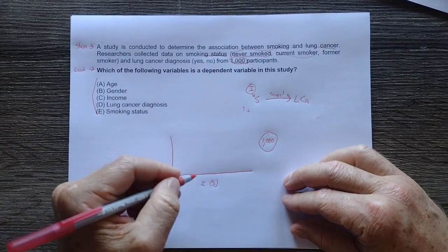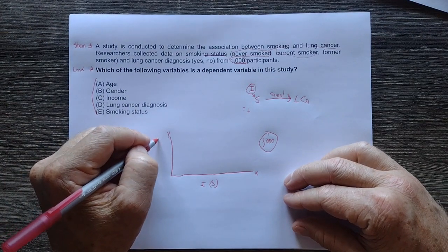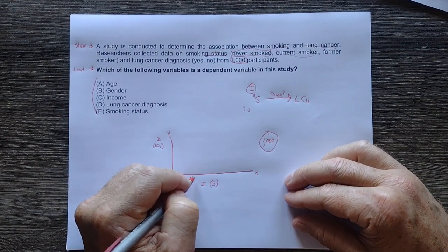That is going to be the independent. If we look at an x-y graph, we have the independent, which is smoking, on the x-axis. On the y-axis, we look at the dependent, which is dependent on the independent. We're going to have never smoked, current smokers, and former smokers.